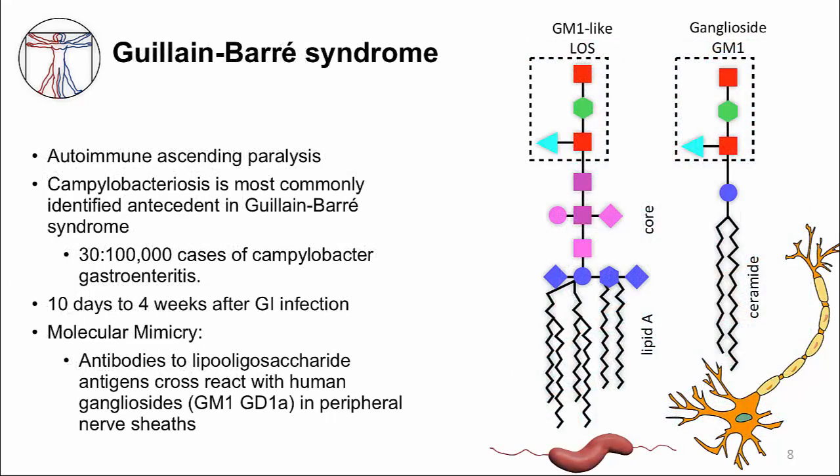Post-infectious sequelae occur because of our immune response to the infection. Guillain-Barré syndrome, also known as GBS, is a neurological disorder where you get an ascending paralysis caused by an autoimmune response. The person experiences symmetric muscle weakness starting at the legs, with difficulty walking progressing to paralysis. The muscle weakness and paralysis then marches up the body. Severe problems arise when the respiratory muscles become weak and paralyzed, requiring intubation and mechanical ventilation.